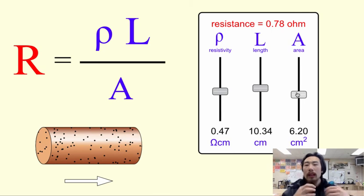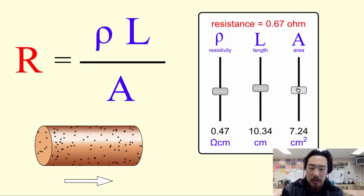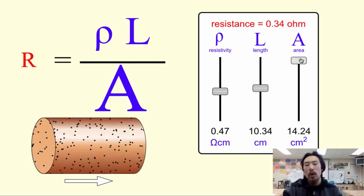All right. Now let's think about why this might happen. So if we increase the area, the overall resistance goes down and that should make sense. Because when the cross-sectional area goes up, it allows for the electrons to travel more smoothly.